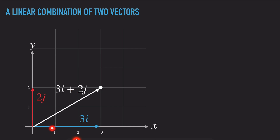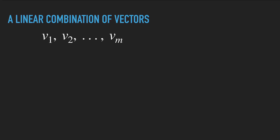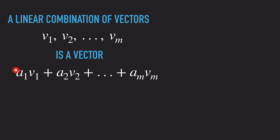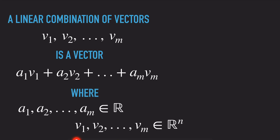That is why we call the vectors i and j the basis of the rectangular coordinate system, since their linear combinations give us any point on it. In general, a linear combination of m vectors v1, v2, ..., vm is a vector obtained by multiplying those vectors by constants — a1 times v1, a2 times v2, ..., am times vm — and summing them. Here, a1, a2, ..., am are real number constants, and v1, v2, ..., vm are n-dimensional vectors. This is the mathematical definition of the linear combination of vectors.